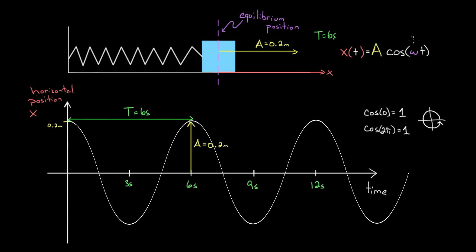If I can make omega big or small, I can make the period of this function whatever I want. You might remember we've used omega before—that was the angular velocity, which was delta theta over delta t: the amount of change in angle over the amount of change in time.